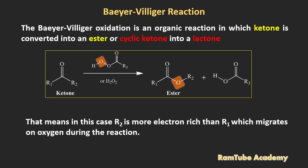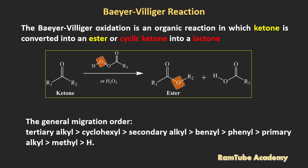How that happens we will see in the reaction mechanism. But before that, go through this migration order of the alkyl or aryl groups during the Baeyer-Villiger reaction. Because that determines what product is going to form during the reaction with asymmetric ketones. One type of example is discussed in the assignment section at the end of the video.